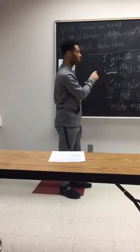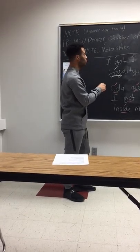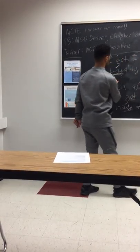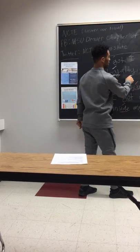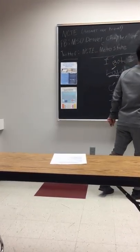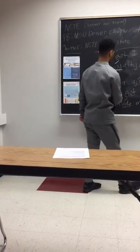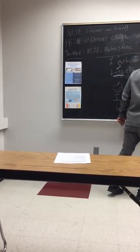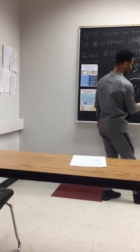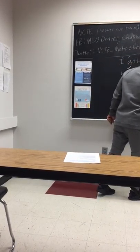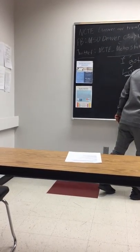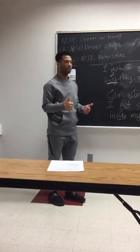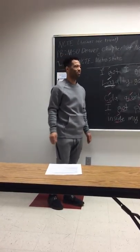On the count of three — one, two, three. I got, I got, I got loyalty, got royalty inside my DNA. Cola, quarter, peace inside my DNA. I got power, poison, and joy inside my DNA. Is that good? Yes. All right, thank you guys very much.